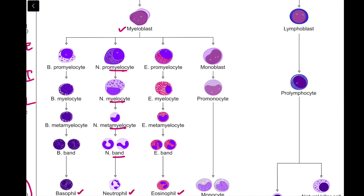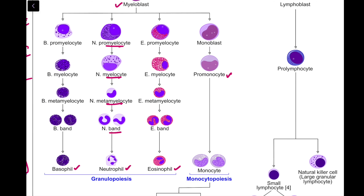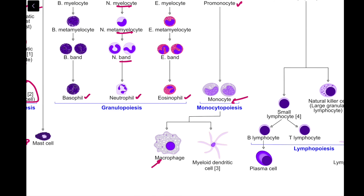Next is the monocyte series. This progresses through the promyelocyte stage in the bone marrow and eventually gives rise to monocytes in the blood. These monocytes from the blood can further develop into macrophages or myeloid dendritic cells in the tissues.